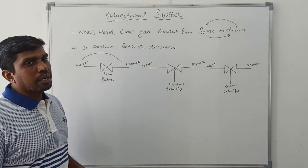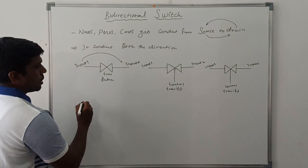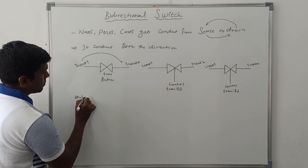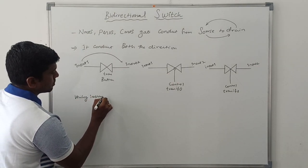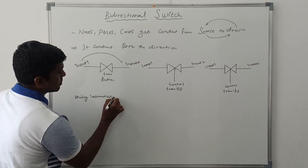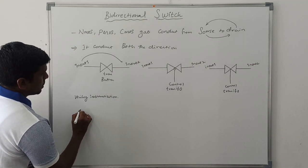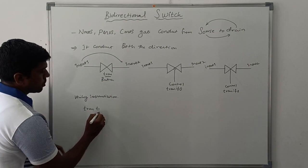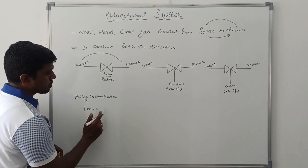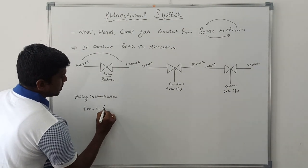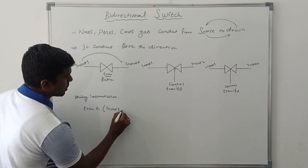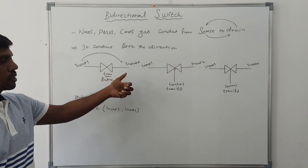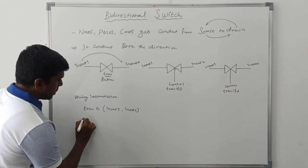Now I am going to write the Verilog instantiation for these three symbols. For the first one — the buffer — the keyword is TRAN. T1 is the instantiation name, which is optional. The ports are in/out one and in/out two, so the input is connected to the output.